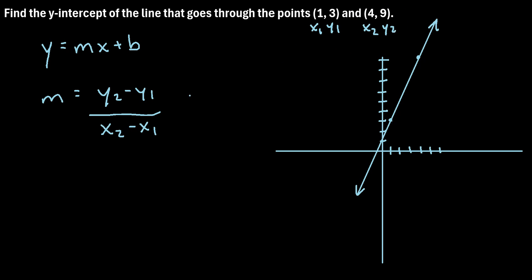So if we plug in the values that we know right here, we have y2 minus y1, so nine minus three, over x2 minus x1, so four minus one.